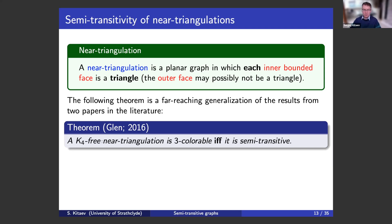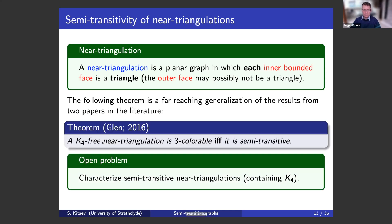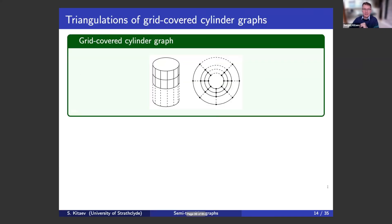It is an open problem to characterize semi-transitive near triangulations containing K4. If you would like to go in the direction of planar graphs, this is probably a more natural problem to start, because it is basically a sub-problem. This is also a hard problem, I should warn you. I'm not going to speak much about this because we're short on time.